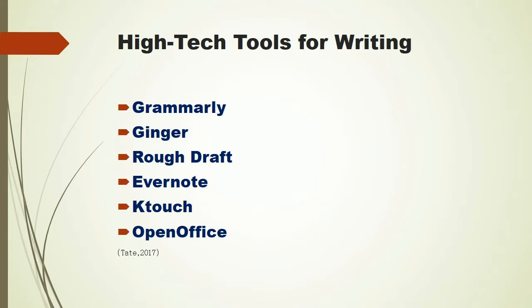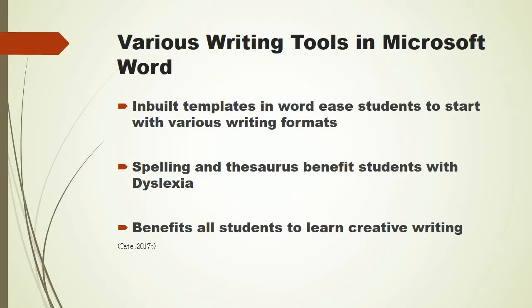High-tech tools for writing include Grammarly, Ginger, Roughdraft, Evernote, Ktouch, and OpenOffice. Various writing tools in Microsoft Word are also useful — inbuilt templates in Word ease students into various writing formats, spelling and thesaurus features benefit students with dyslexia, and these tools benefit all students to learn creative writing.